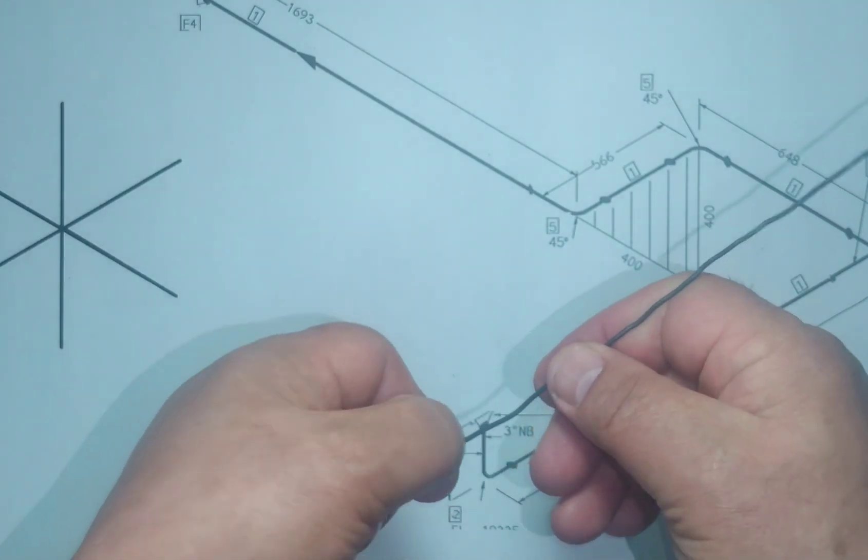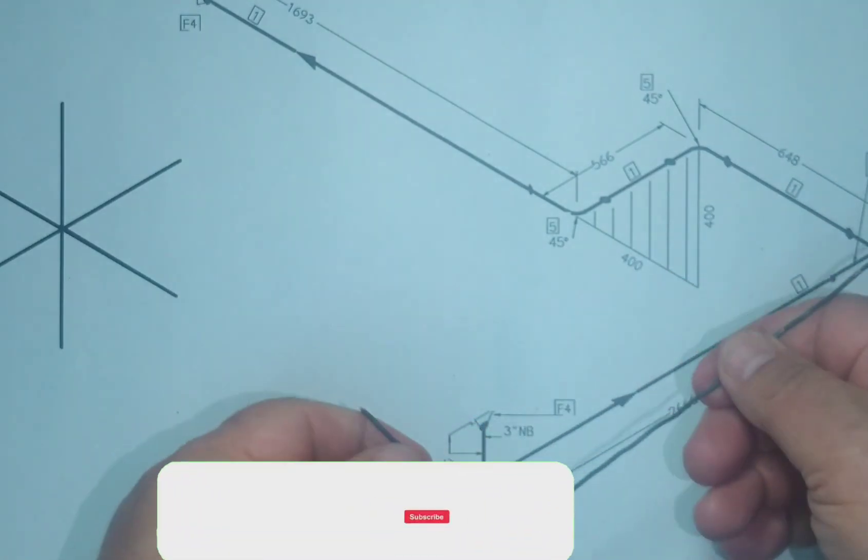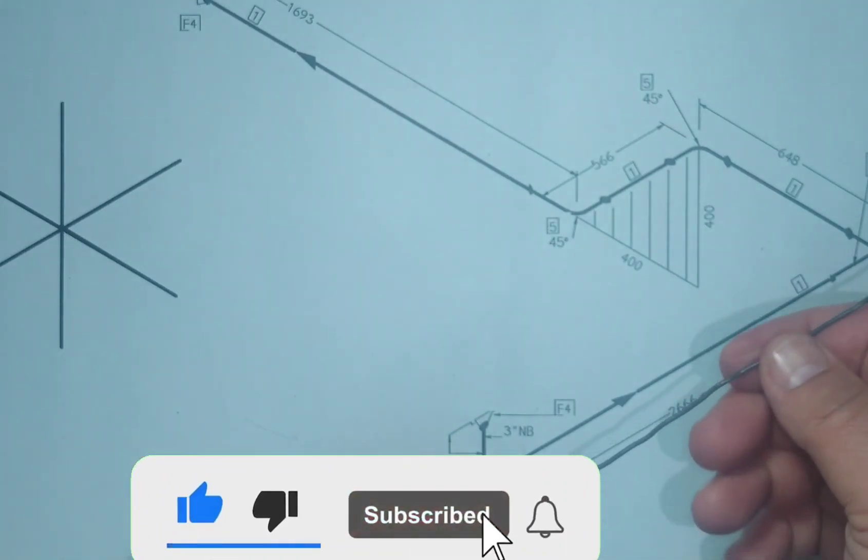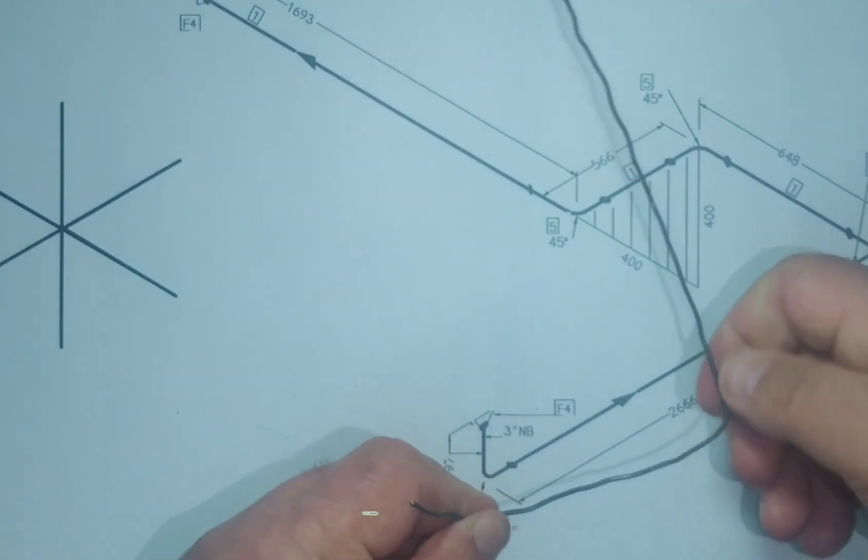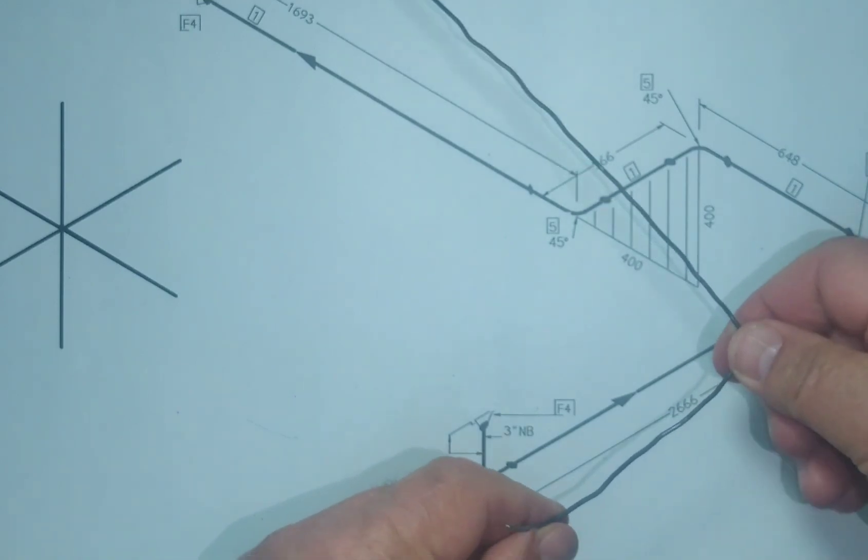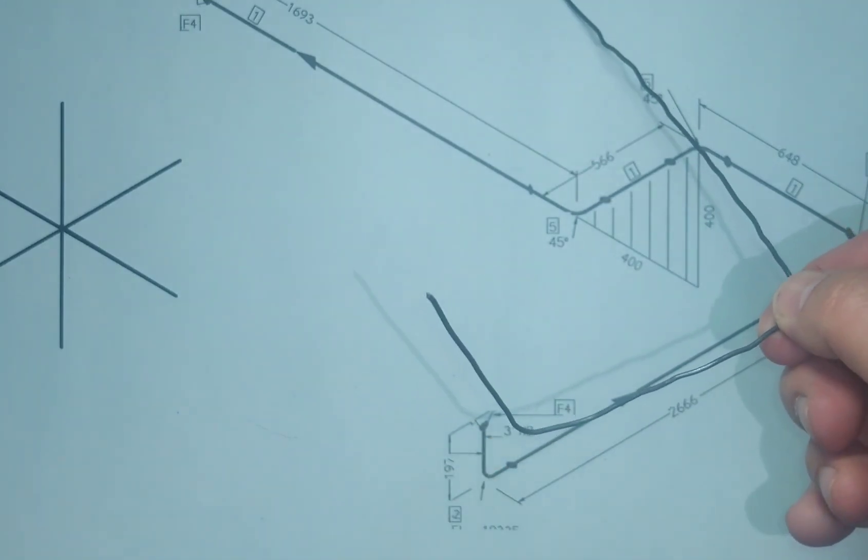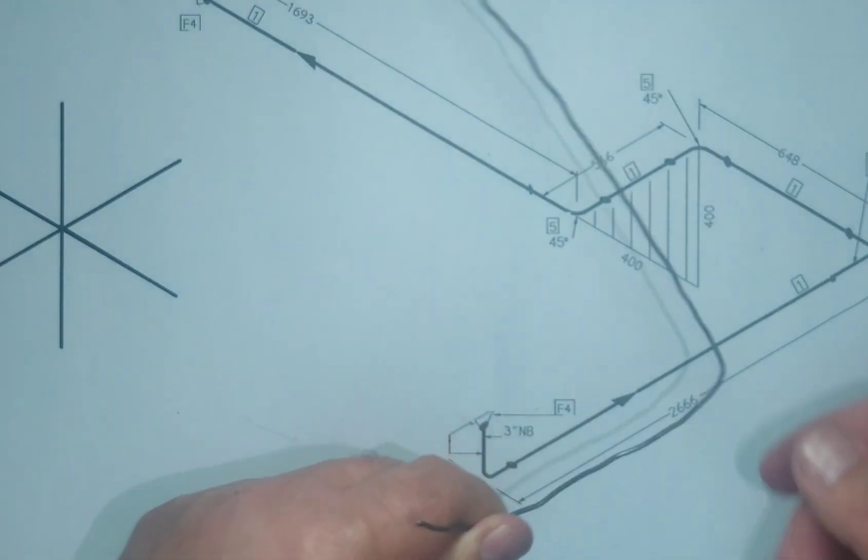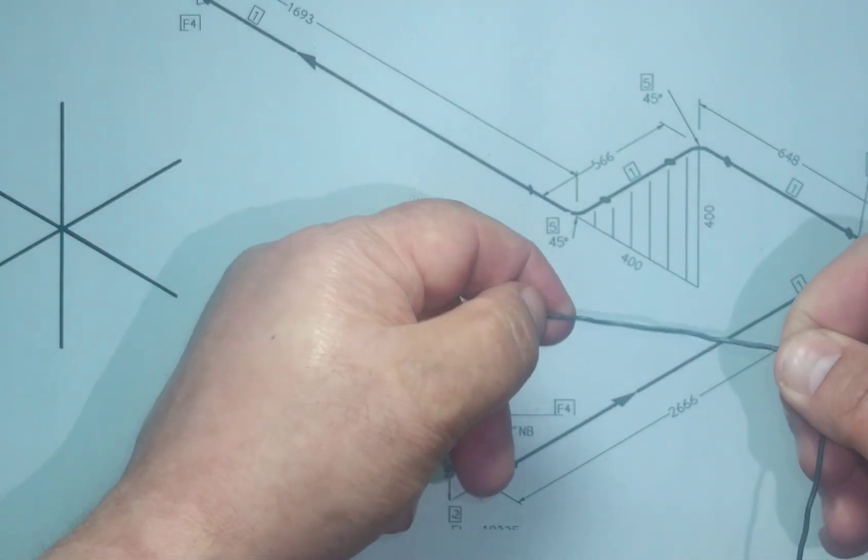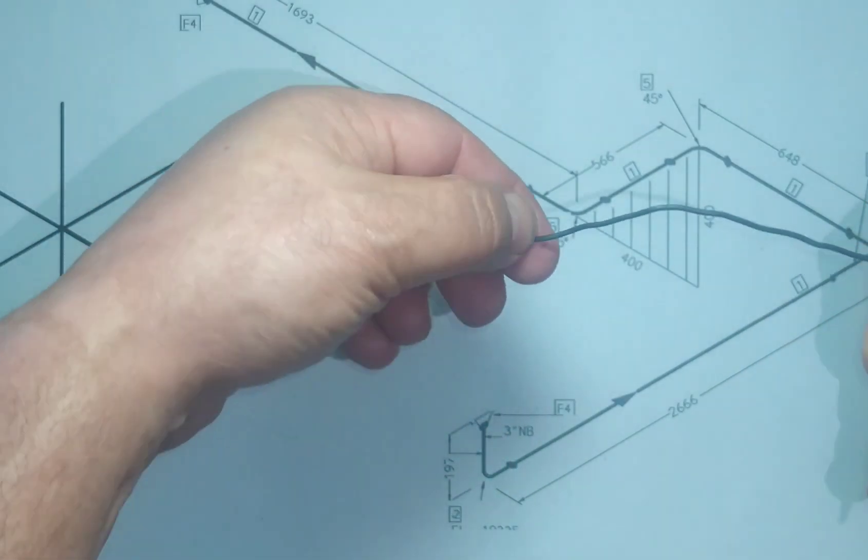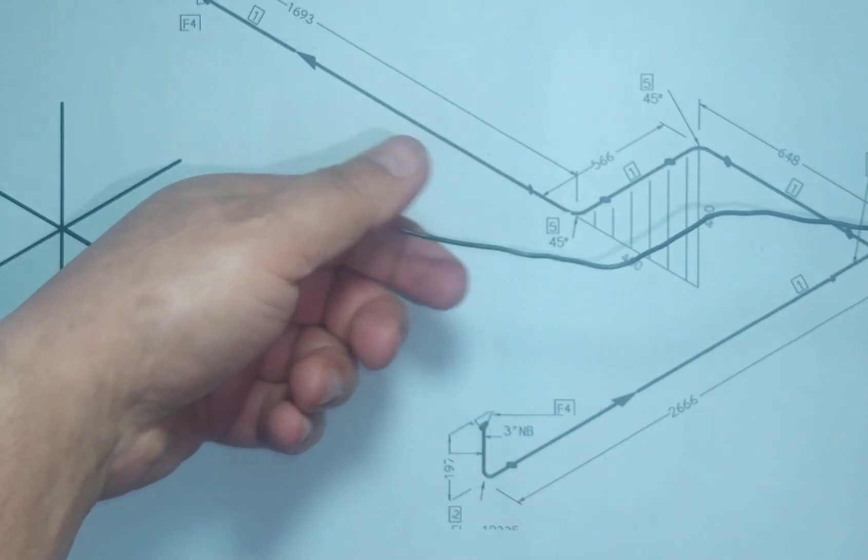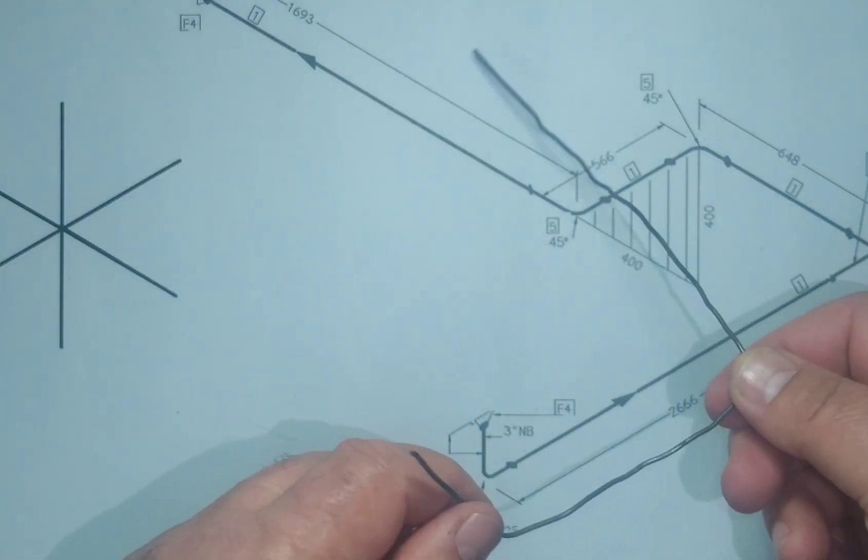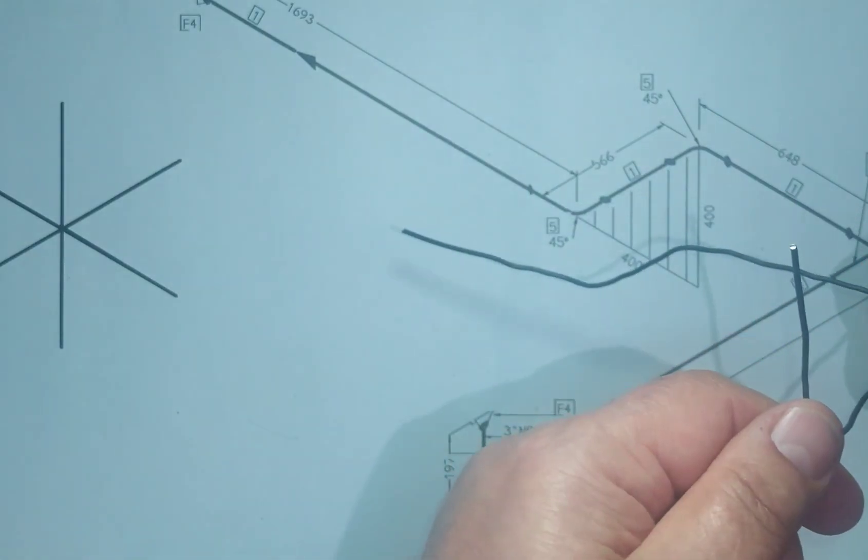Then the wire bending first to the east. Then the wire bending to the north direction. Then the wire bending northwest direction. Then the wire continues to the north direction. The wire bending is complete.